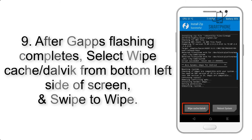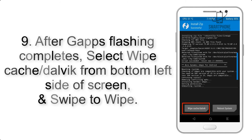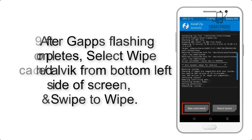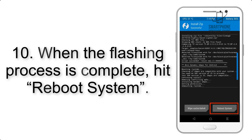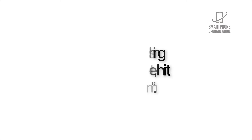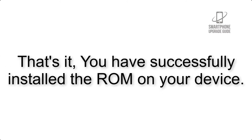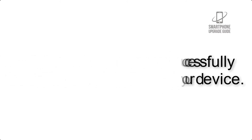Step 9: After GApps flashing completes, select Wipe Cache and Dalvik from the bottom left side of the screen and swipe to wipe. Step 10: When the flashing process is complete, hit Reboot System. That's it — you have successfully installed the ROM on your device.